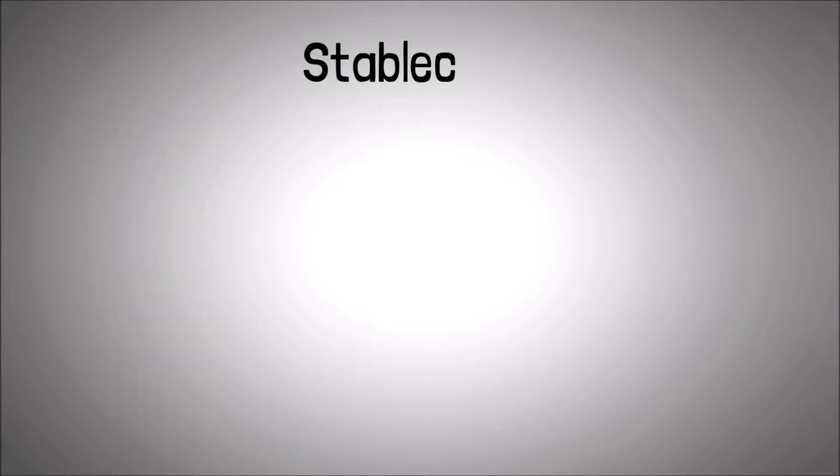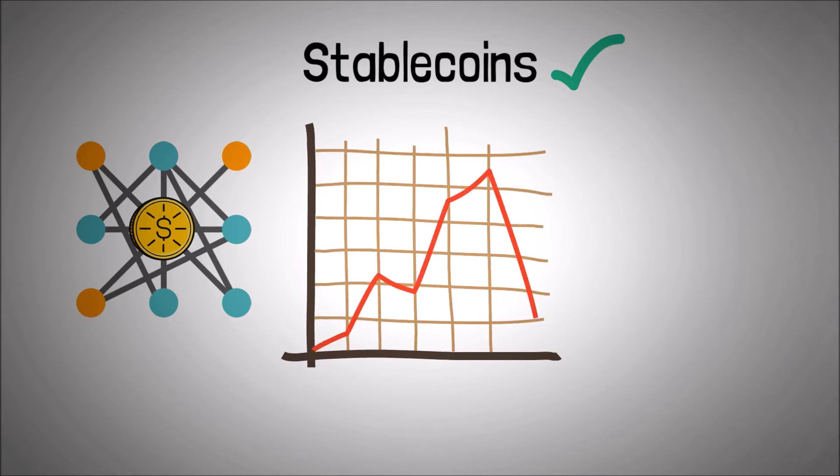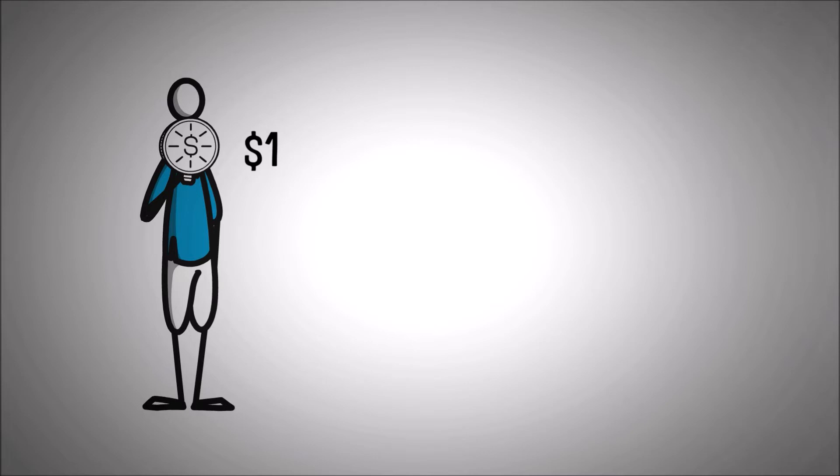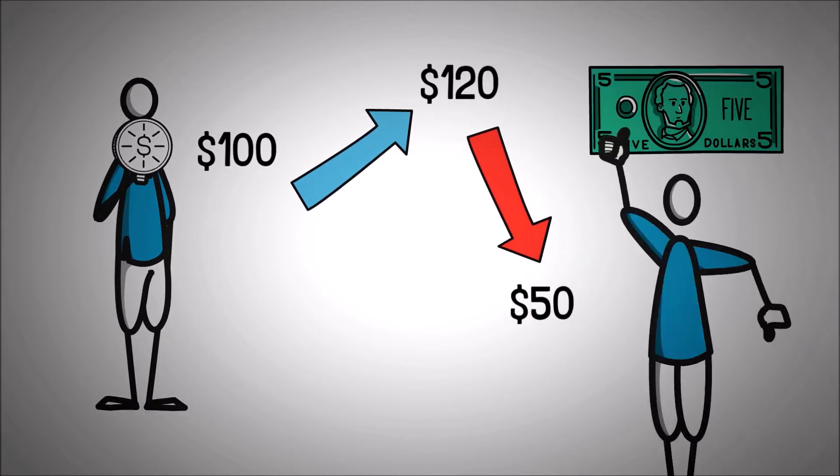First off is stablecoins. One of the requirements for DeFi to replace the existing financial system is to have stablecoins. At present, major cryptocurrencies are highly volatile. Such uncertainty deters people from participating in the crypto world. Imagine holding a currency that is worth $100 today, $120 tomorrow, and $50 a day after. You would rather hold a stable currency, like the US dollar, than such an unstable currency.